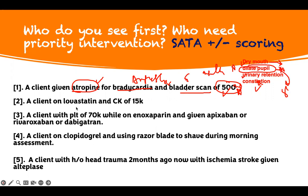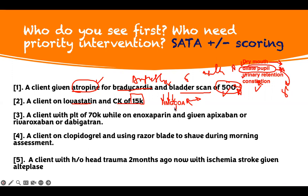A client on lipostatin with a CK of 15,000. Lipostatin is a statin. What is the biggest problem with statins? If you look at the HMG-CoA reductase side effects: H is hepatotoxicity — causes liver problems. They have a muscle problem. R is rhabdomyolysis. G is a glucose problem. G is also conjunctivitis.